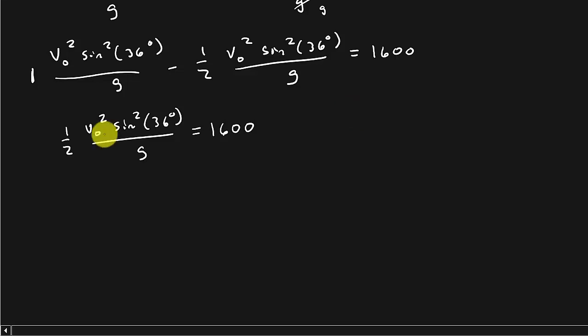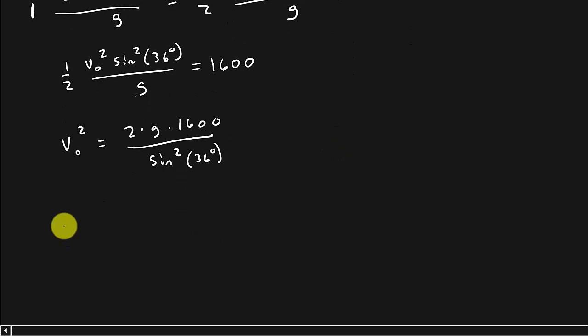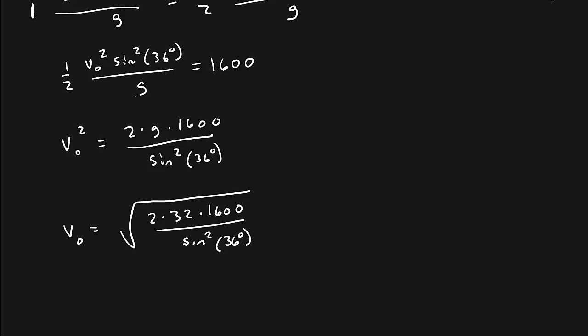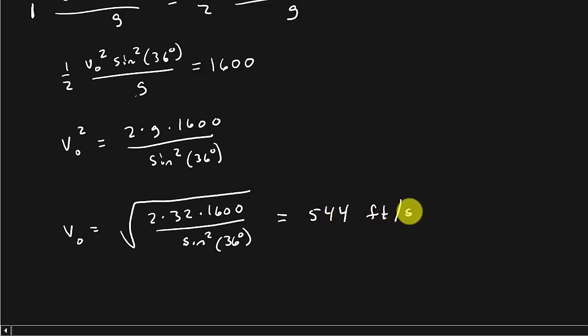Now we can solve for V naught. The 2 and the G go up there. So V naught squared equals 2 times G times 1600 over sine squared 36. V naught equals the square root. That's going to be 2 times 32 times 1600 over sine squared 36. If we plug that into our calculator, that is going to give us 544 feet per second.